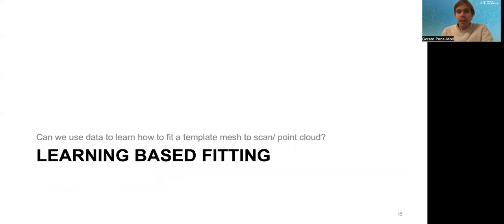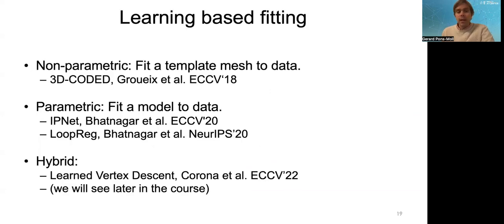We're going to see how we can use learning to improve this registration process. In particular, we're going to see two types of models. Very briefly, non-parametric models that don't use a SMPL parametrization, and parametric models that use a parametric model like SMPL, but they use training data and deep learning to learn the correspondences from the point cloud to the template of the SMPL model. There's a third approach that are what I call hybrid. This is a very recent work which we call learned vertex descent, which is neither. We will see these in future lectures, but not in this lecture.